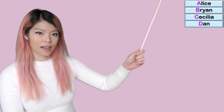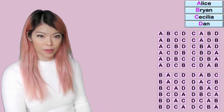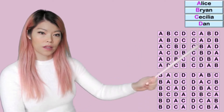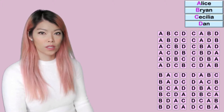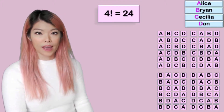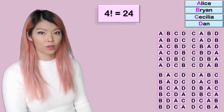Previously, we had a look at arrangements in a straight line. For example, if I had Alice, Fry, Cecillian, and Dan, how many different ways can they stand in a straight line? We looked at the data and we saw that there were 24 different arrangements, and we worked it out by doing 4 factorial.